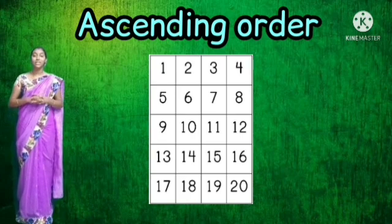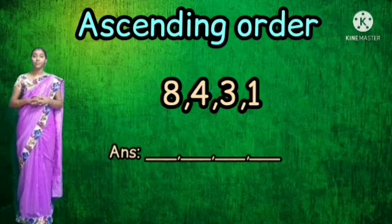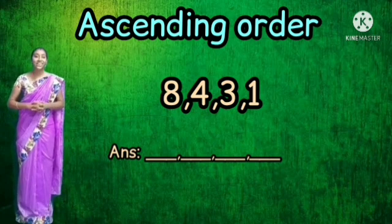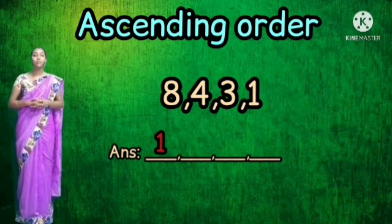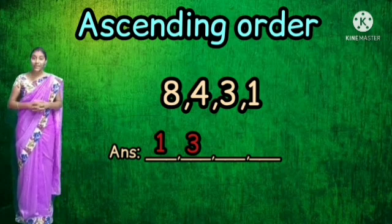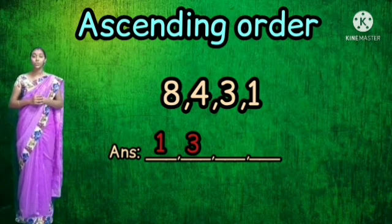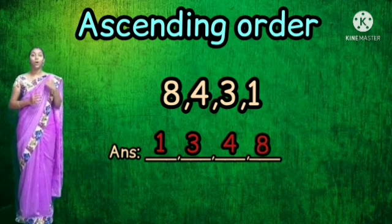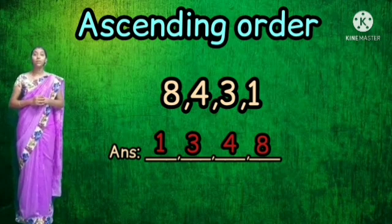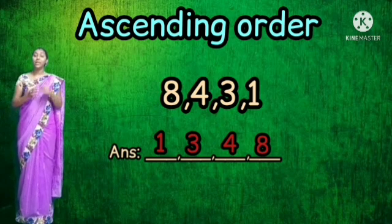From these numbers, we are going to arrange in ascending order. The numbers are eight, four, three, one. Which is the smallest number? One. So number one is written first. Then from eight, four, three — which is smallest? Three. After one, write three. Then from eight and four — which is smallest? Four. After three, write four. And the biggest number at last — eight. So the order is one, three, four, eight. Remember: arrange from the smallest number to the biggest number.